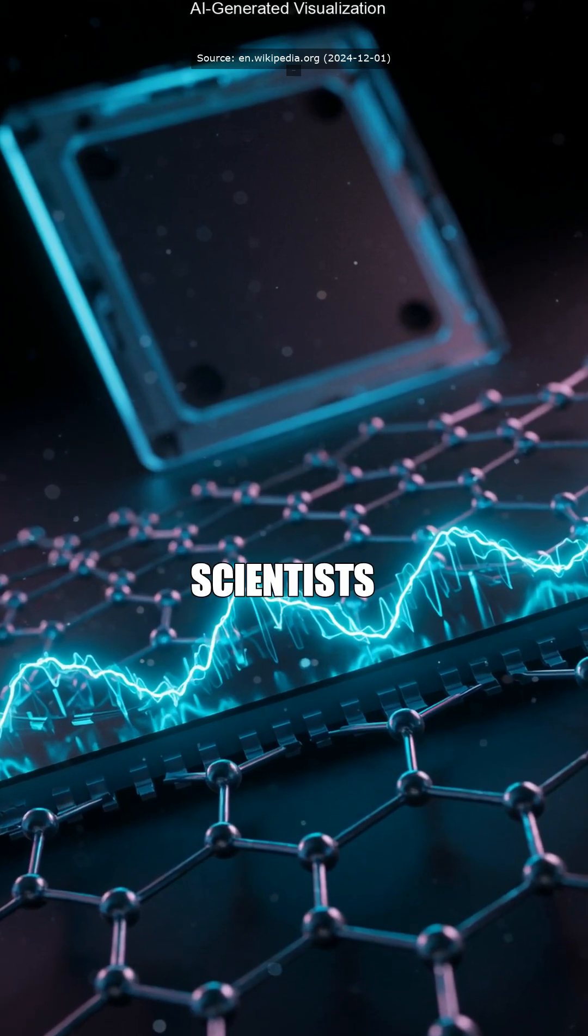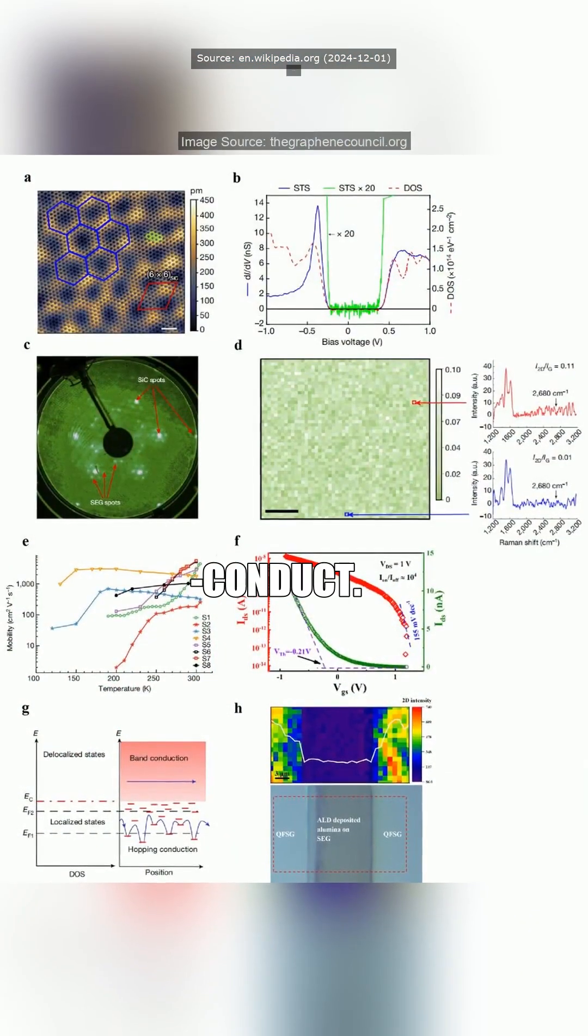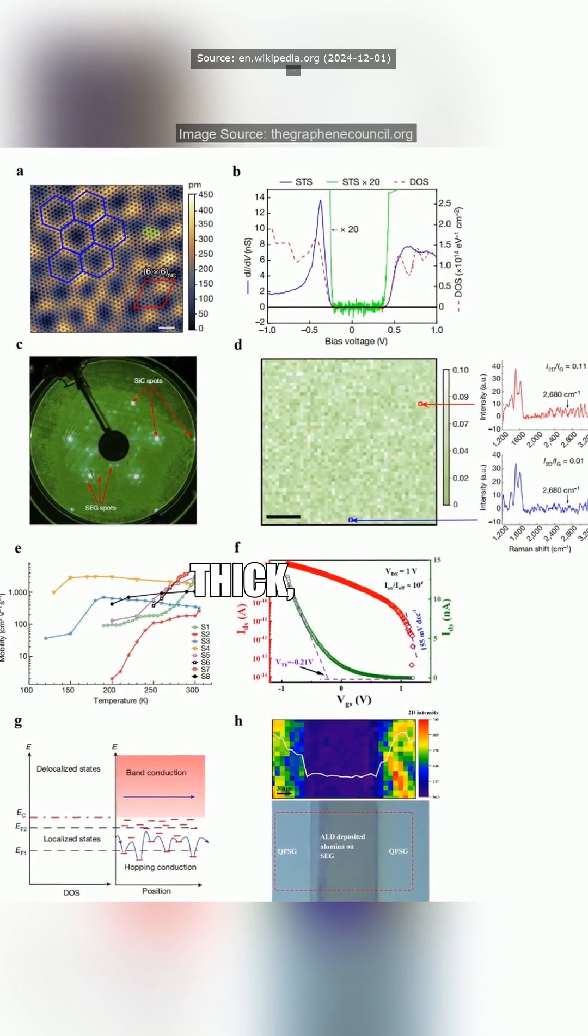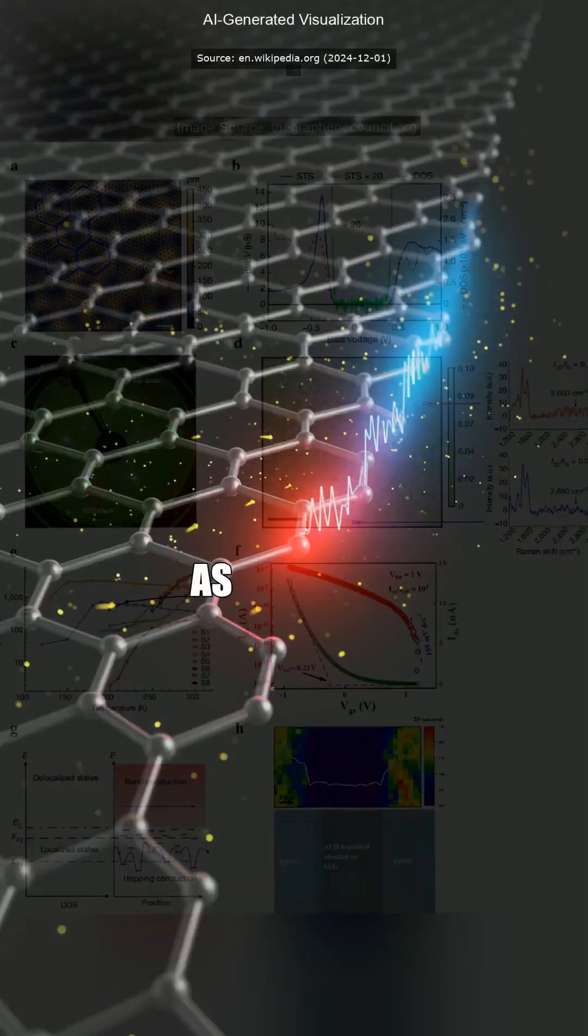Close. Scientists just crafted the first ever graphene semiconductor. Literally one atom thick, ultra-fast, and energy-efficient as hell.